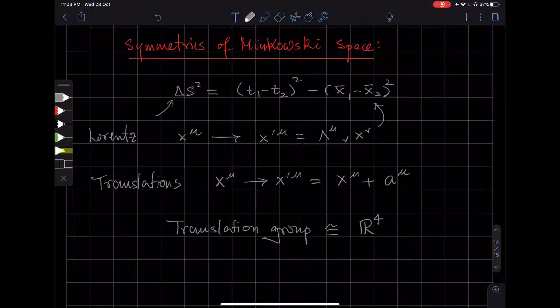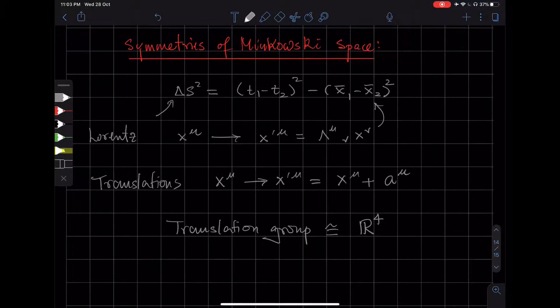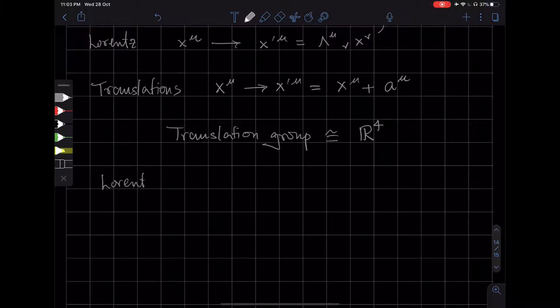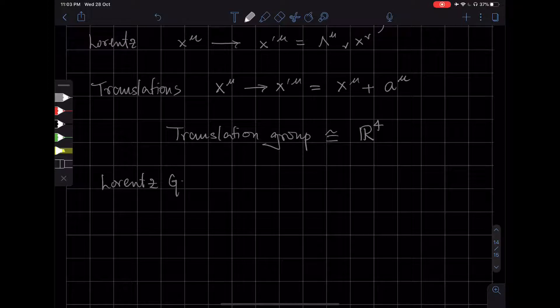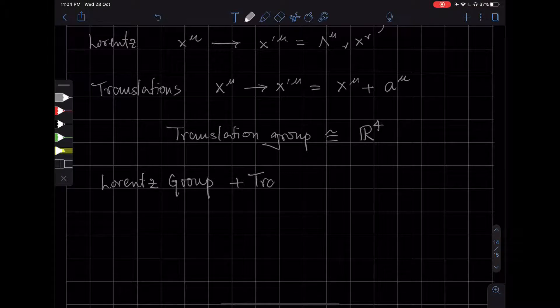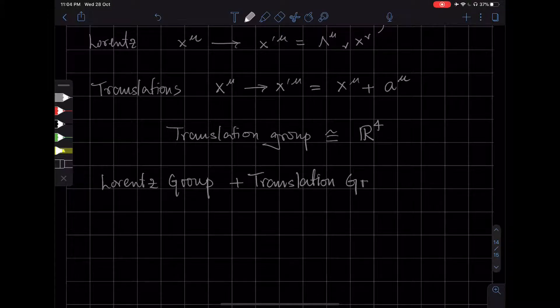So the Lorentz group and the translation group together form the Poincaré group. The Lorentz transformations, which of course form a group, and if you add to them the translation, the translation group, then you get what is known as the Poincaré group.